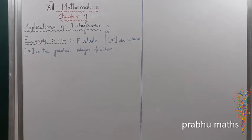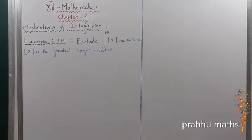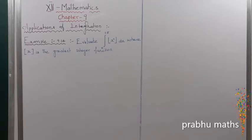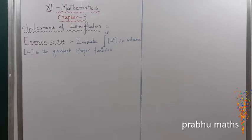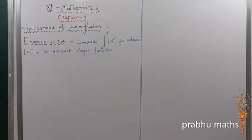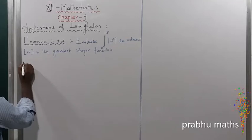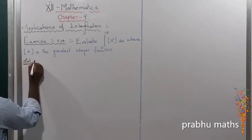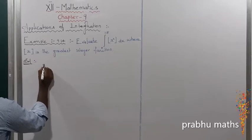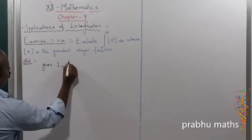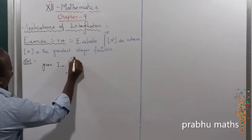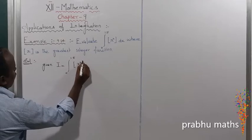Example 9.14: Evaluate the integral from 0 to 1.5 of the greatest integer function of x squared dx. The greatest integer function is given. So to find the value of the integral from 0 to 1.5 of the greatest integer function of x squared, the given integral value is I equals the integral from 0 to 1.5 of the greatest integer function of x squared dx.